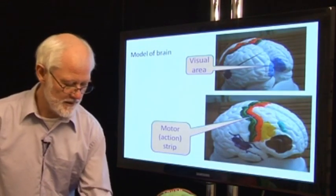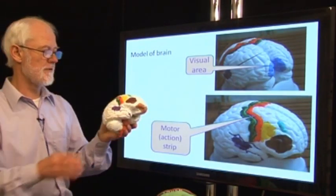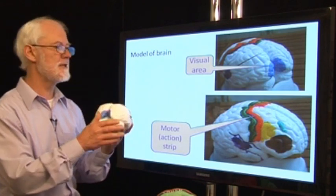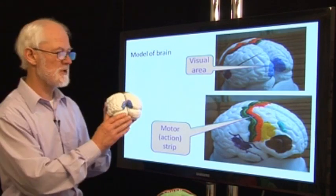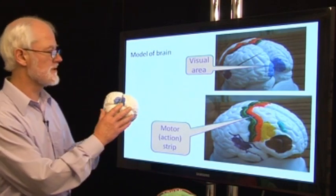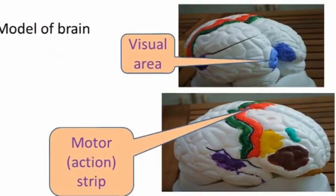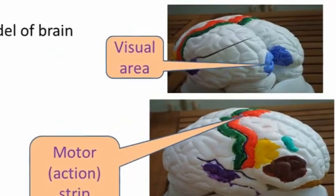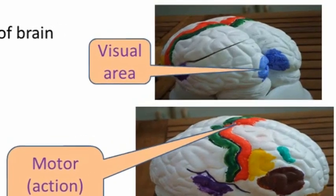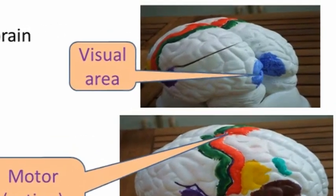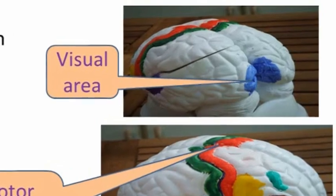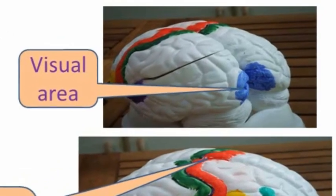Now if we take this model of the brain, we could start to paint on it the jobs which are done in specific areas. For instance, I've painted in blue the primary visual cortex. When you see something with your eyes, the information is first transmitted right to the back of the brain here in the primary visual area.